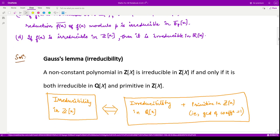There is a result known as Gauss's Lemma for irreducibility. They say if we have any non-constant polynomial, then that polynomial is irreducible in Z[x] if and only if it is irreducible in Q[x], moreover it should be primitive polynomial in Z[x].